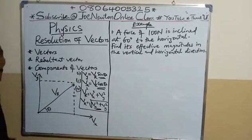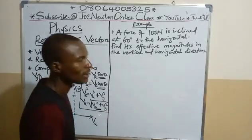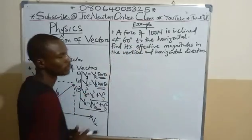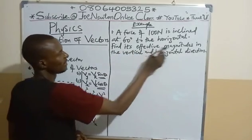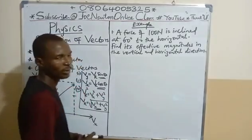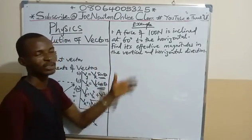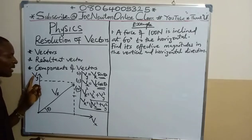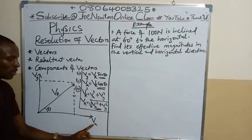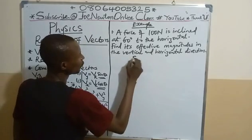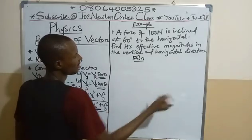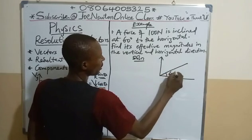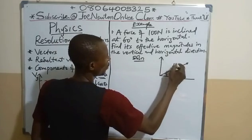We can now proceed to an example on the board. A force of 100 Newtons is inclined at 60 degrees to the horizontal. We are requested to find its effective magnitudes — that is, the values — in the vertical and horizontal directions. By implication, it means finding the vertical component and horizontal component. Remember, Vy represents the vertical component and Vx the horizontal component. Since the question is about force, we use F, with Fy for vertical and Fx for horizontal. The resultant is given as 100 Newtons and the angle is 60 degrees.